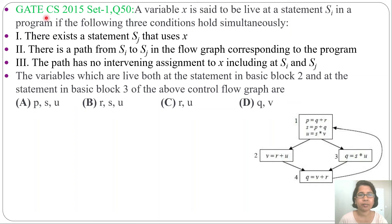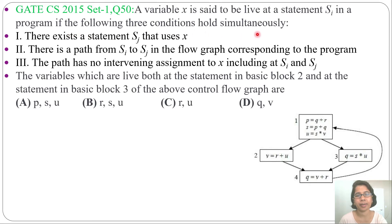Let's solve one previous question of Live Variable Analysis from Compiler Design. This question was asked in GATE CS 2015, Set 1, Question number 50. A variable x is said to be live at statement si in a program if the following three conditions hold simultaneously.